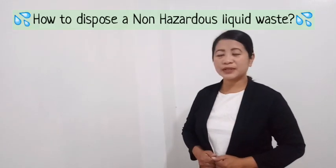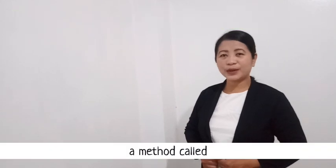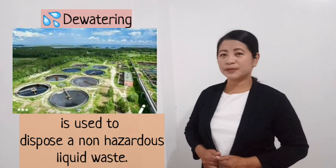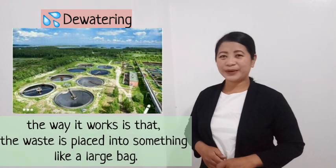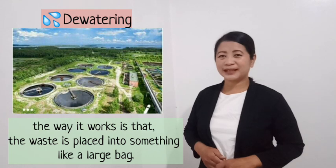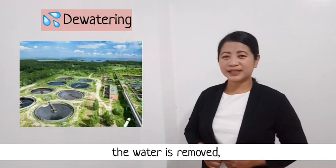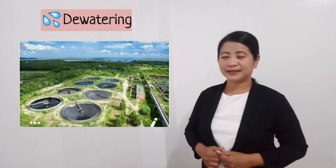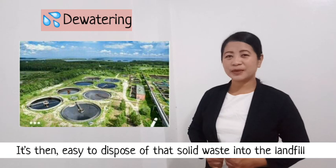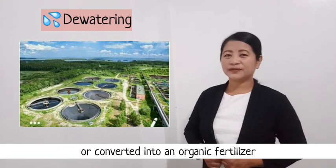How do we dispose of waste? A method called dewatering is used to dispose of non-hazardous liquid waste. The way it works is that the liquid is put into something like a large bag. The water is removed and only the solid waste is left behind. It is then easy to dispose of that solid waste into the landfill or convert it into an organic fertilizer.